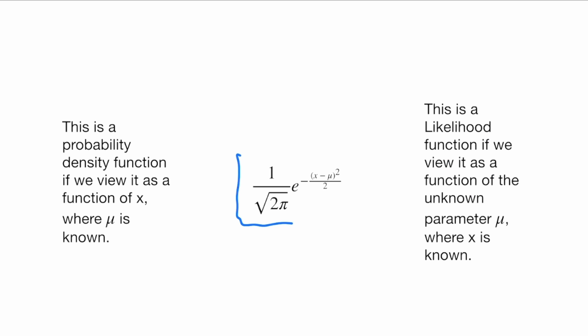So this same function — this density function — can be viewed in two ways. It is a probability density function if we view it as a function of x, where mu is known. So if we know the parameter and we know which universe we're in, then it is a density function. But if we fix x, if we observe our data and view it as a function of mu, the unknown parameter, then we call it a likelihood function.